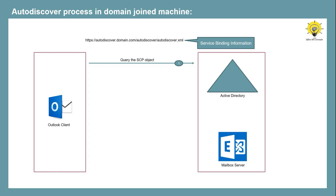When you create an SSL certificate for your Exchange Server, you need to make sure that autodiscover.domain.com is added under the subject alternate name of that SSL certificate, so that communication over this URL can be secured — otherwise, the Autodiscover request will fail. From this URL, Outlook client will retrieve the profile information in the form of an XML file that is required to connect to the user's mailbox and to access other Exchange services.